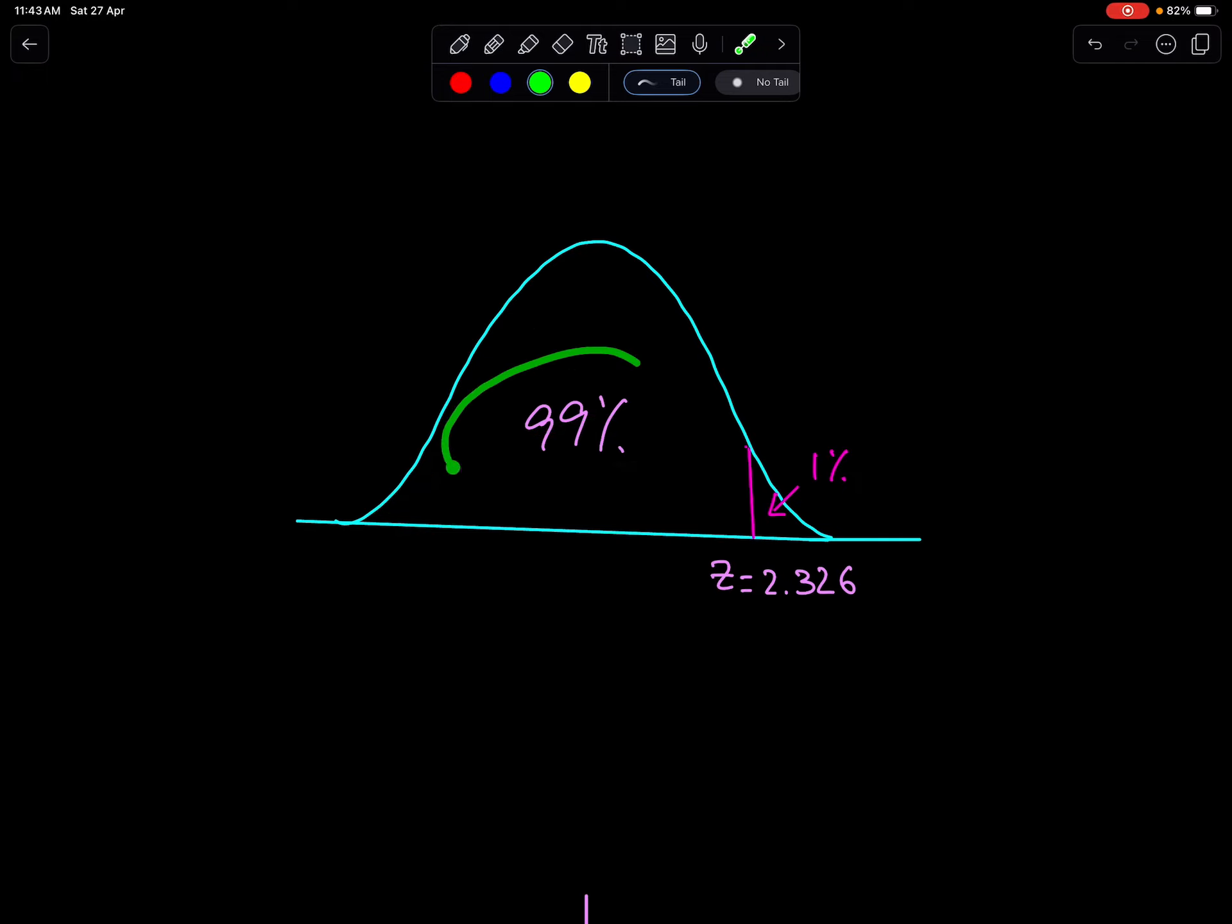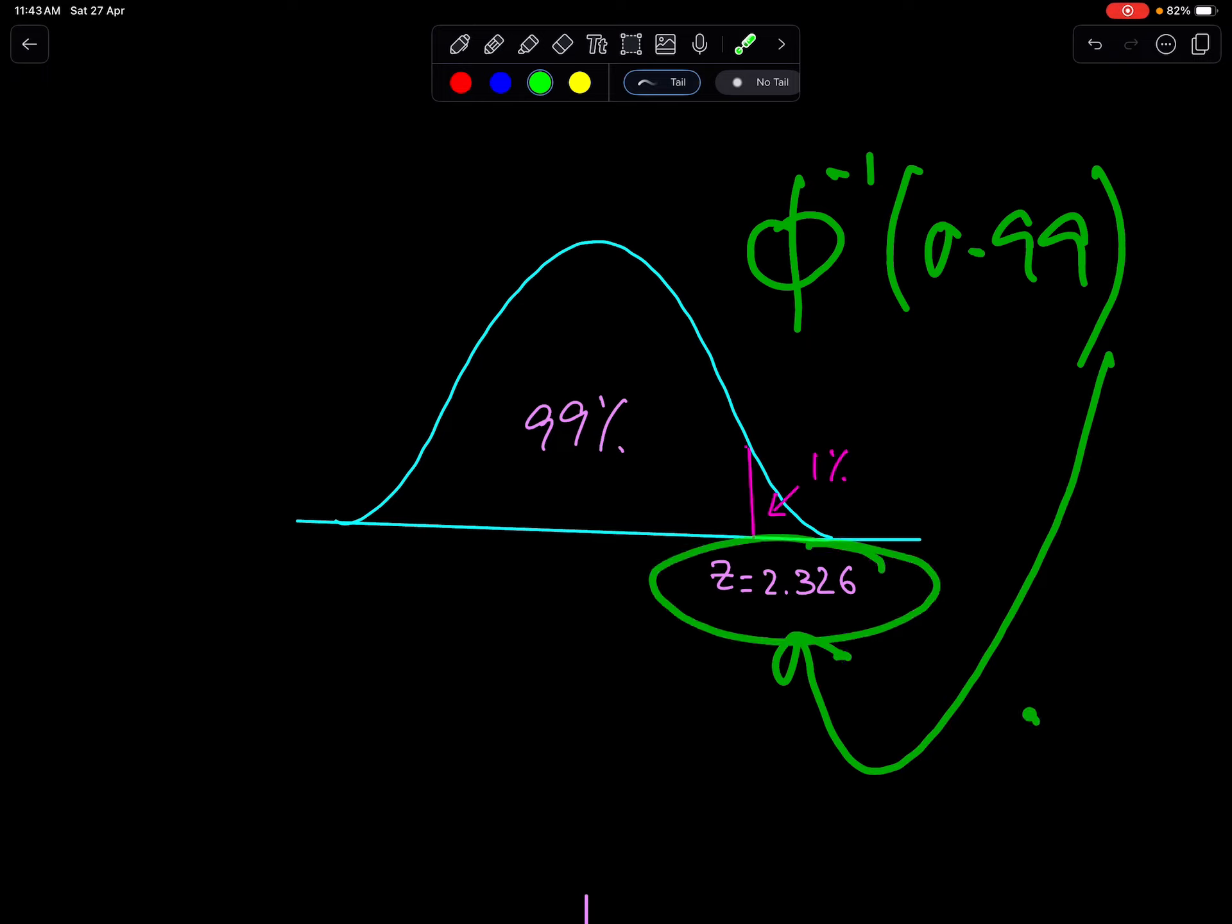Now just check 99% either in your calculator or in table. When you check phi inverse 0.99 you will get 2.326. This is a way to get the value of Z in confidence interval.